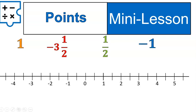All right, here we go. Our first point, one, that's the orange point. That would go right here on the number line. That one's pretty straightforward. It's a positive whole number, not bad.